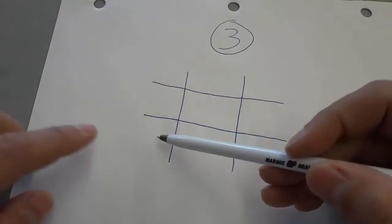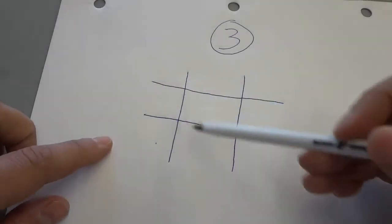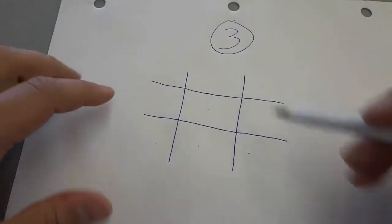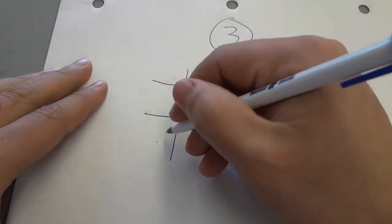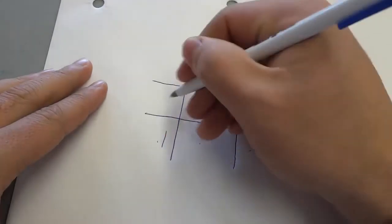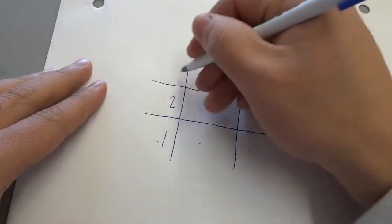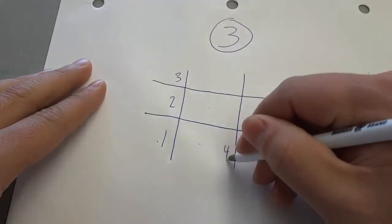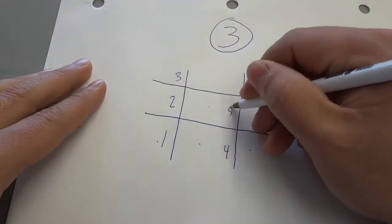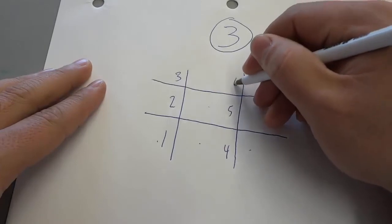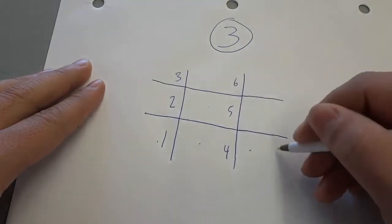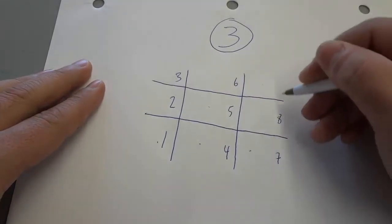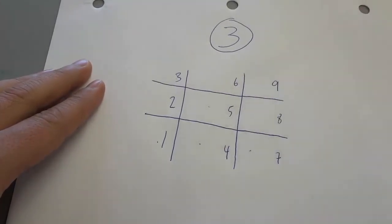Now within each of these boxes, you're going to start off by writing numbers in order. So we're going to go 1, 2, 3, 4, 5, 6, 7, 8, 9.